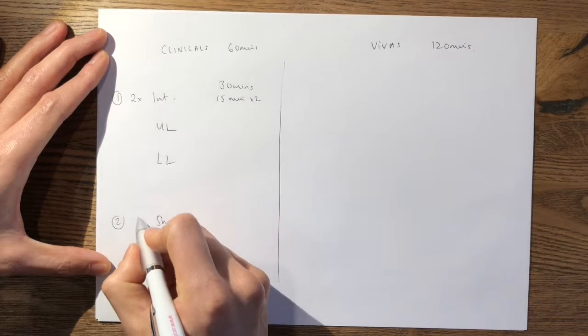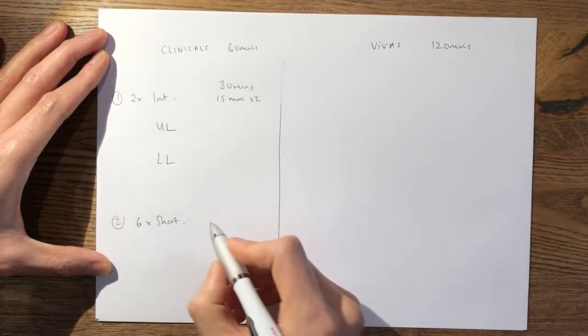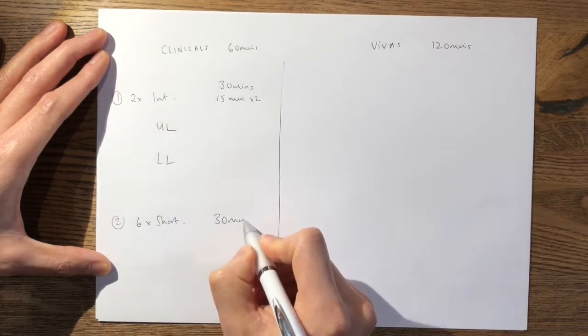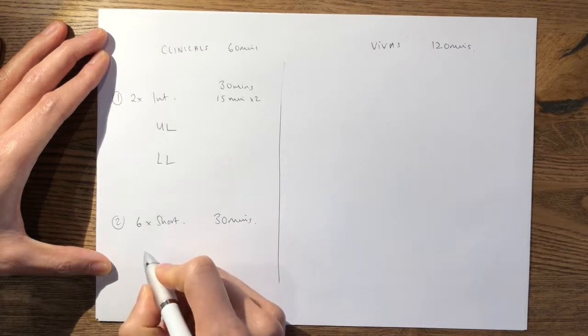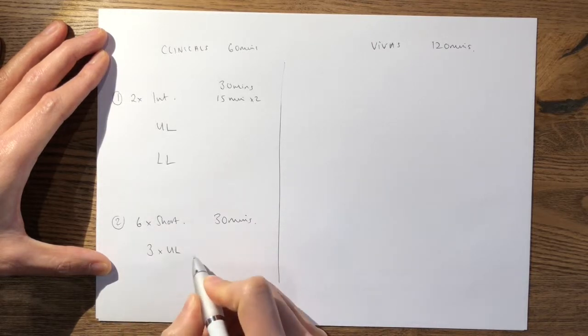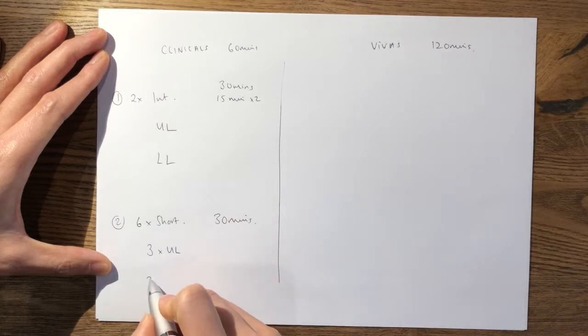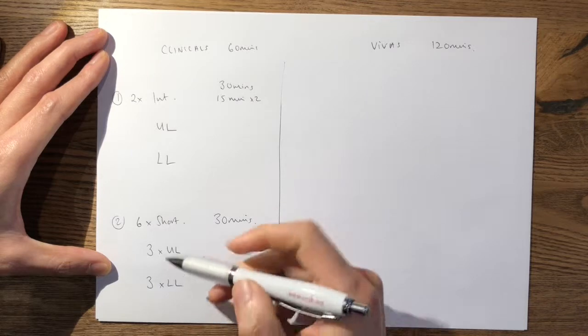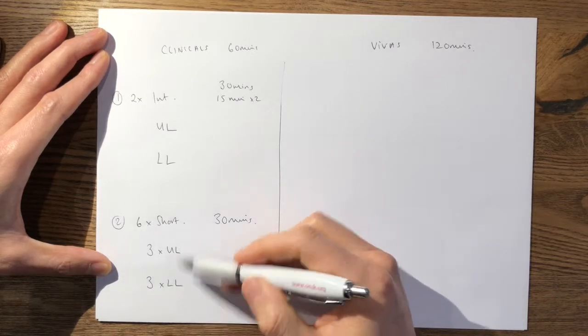In your shorts, you have six short cases which total 30 minutes again, and these are divided up into three upper limb shorts lasting five minutes each and three lower limb shorts which also last five minutes each, and again spines can crop up in either one of those.